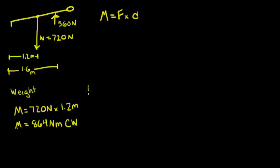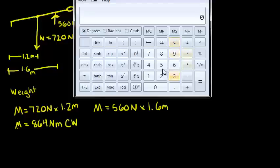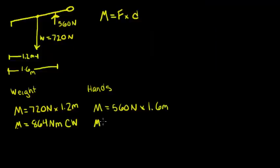Now, let's solve for the moment of his hands. So, we know that we have a force of 560 newtons at a distance of 1.6 meters. We'll plug this into our calculator. We find this moment to be 896 newton meters in the counterclockwise direction.